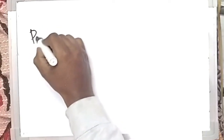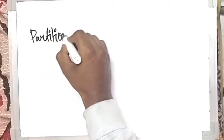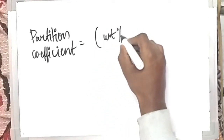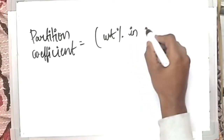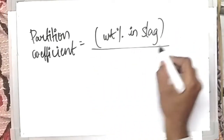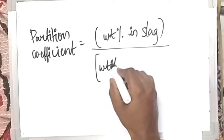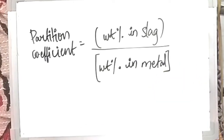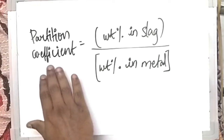Briefly, we will see what is this partition coefficient. Partition coefficient is nothing but a ratio of the weight percentage of any component that is present in the slag to the final weight percentage of that component that is present in the metal. So if I am talking about the desulfurization ratio,